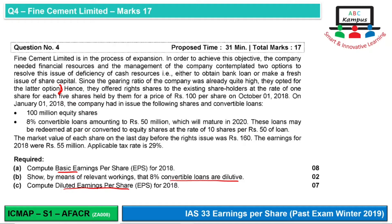They offered right shares to existing shareholders at the rate of one share per each five held, for a price of Rs. 100 per share on October 1, 2018. On January 1, 2018, the company had in issue the following: 100 million equity shares, and 8% convertible loans amounting to Rs. 50 million, maturing in 2020. These loans may be redeemed at par or converted to equity shares at the rate of 10 shares per Rs. 50 of loans. Market value of each share on the last day before the right issue was Rs. 160. Earnings for 2018 are Rs. 55 million and the applicable tax rate is 29%.